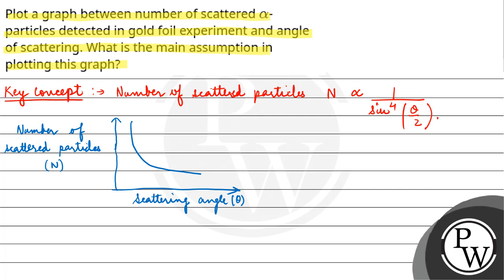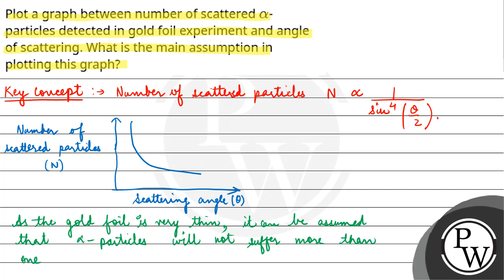Now if we talk about the assumption, as the gold foil is very thin, it can be assumed that alpha particles will not suffer more than one scattering.